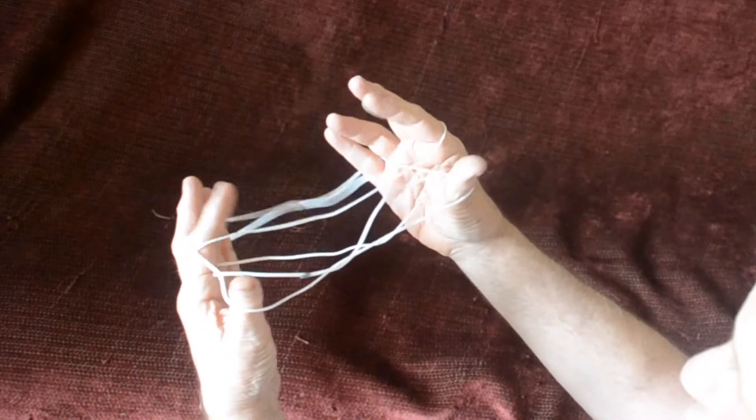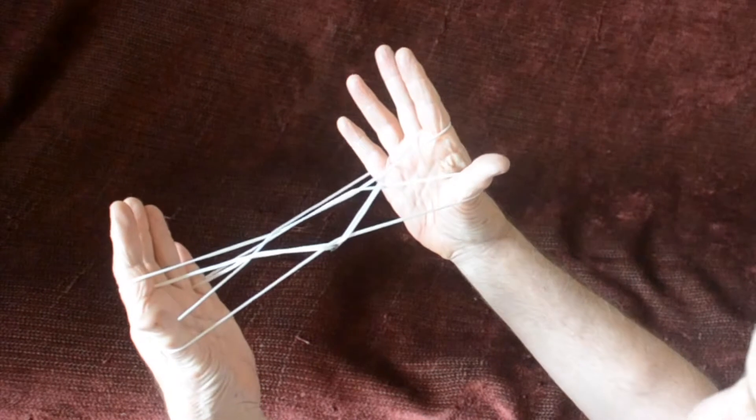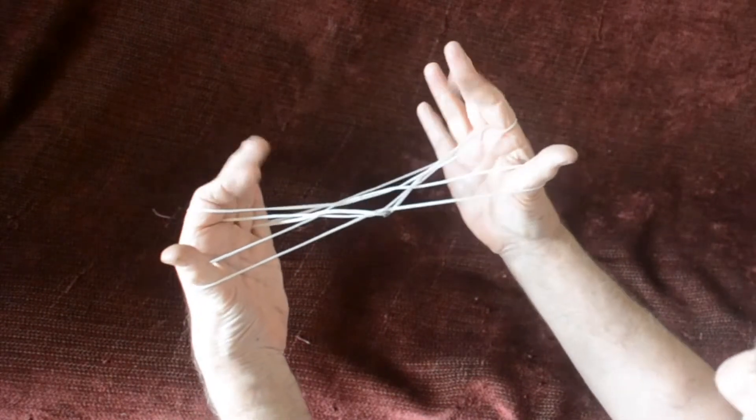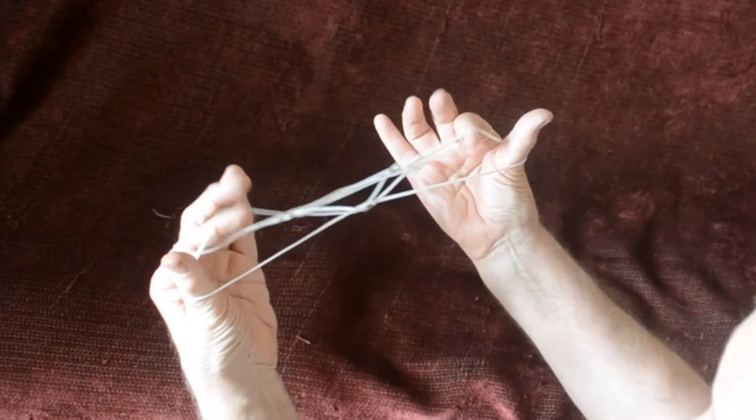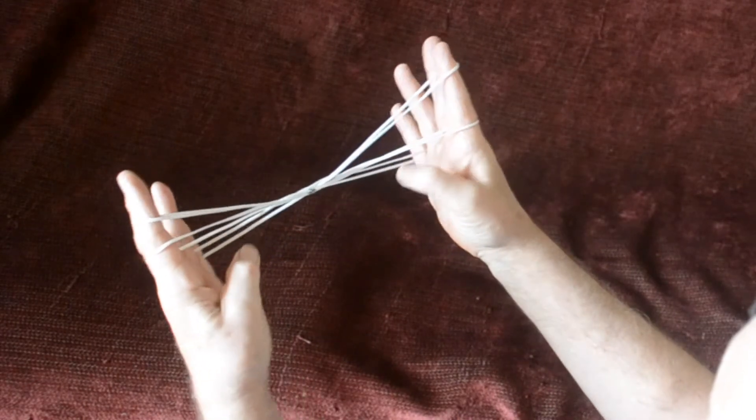Now release the upper index loops only, draw tight. And now with the indices, lift the thumb loops to be the new upper index loop, releasing the thumbs in the process.